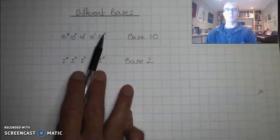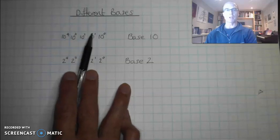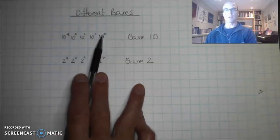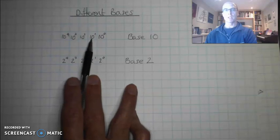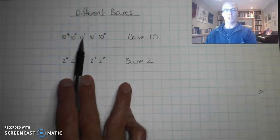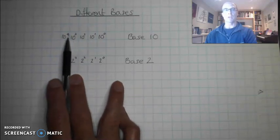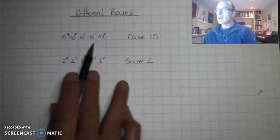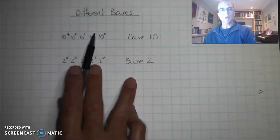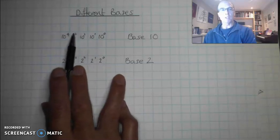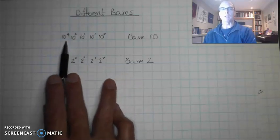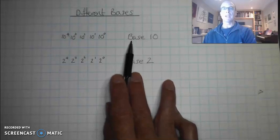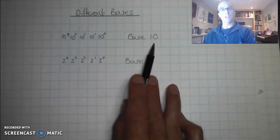We've got different powers — the powers start at 0, then 1, 2, 3, 4. So 10 to the power of 0 is 1, 10 to the 1 is 10, 10 squared is 100, 10 cubed is 1,000, 10 to the 4 is 10,000. My powers are going up by 1 each time, my base stays the same at 10. So the number system is decimal or base 10.